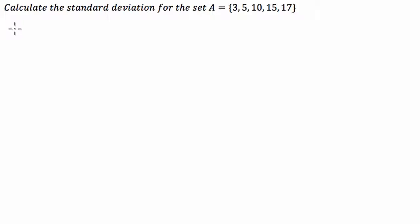So we'll call the average x-bar. So x-bar is going to be equal to 3 plus 5 plus 10 plus 15 plus 17, all divided by 5. So that's going to be 8, 18, 28, 30, 3, 50 over 5, which is equal to 10.